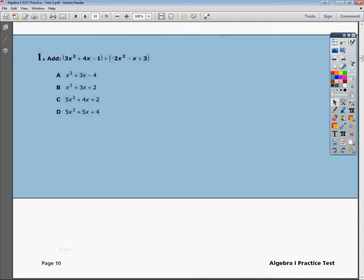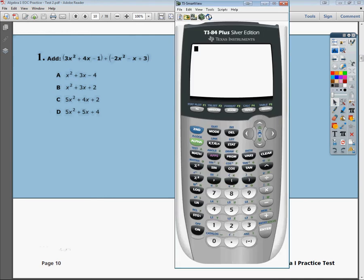All right, this is the Algebra 1 practice test. This is the second practice test, so practice test 2. Question number 1. So the question says, add 3x squared plus 4x minus 1 plus negative 2x squared minus x plus 3.